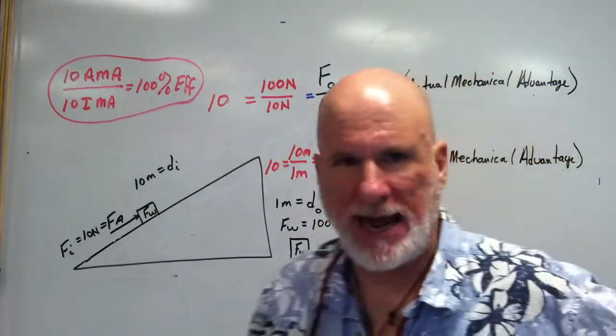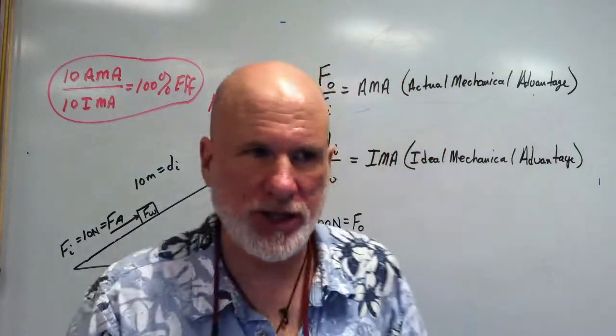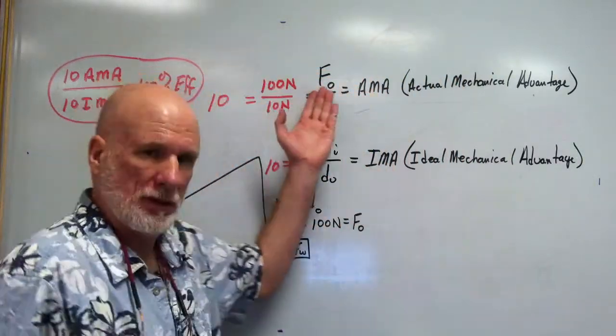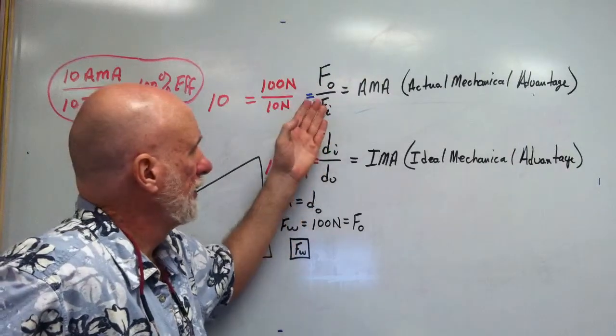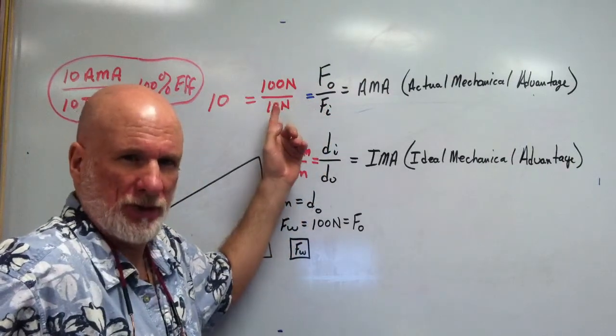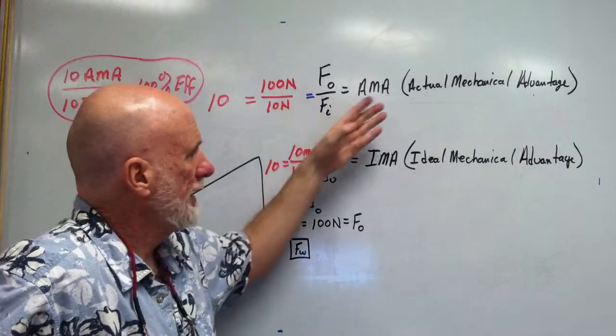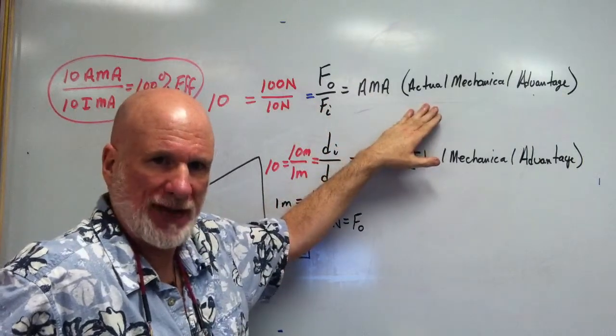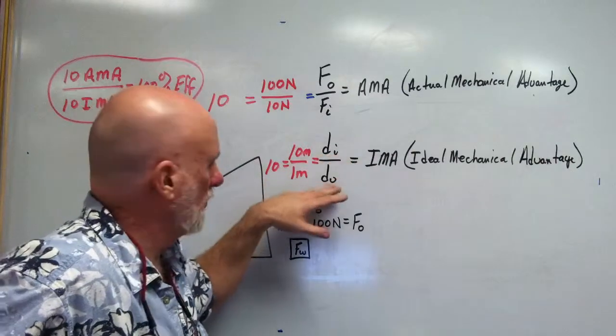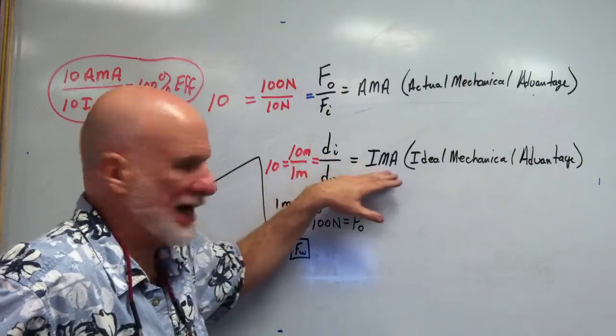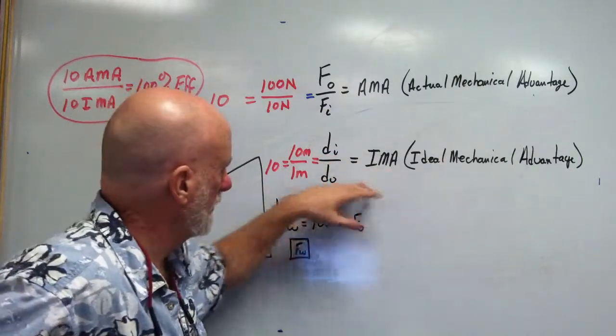Two ratios that you're going to have to know. The first is force output over force input. 100 newtons over 10 newtons. That's called the actual mechanical advantage, or AMA. The DI over DO, that's going to be the ideal mechanical advantage.